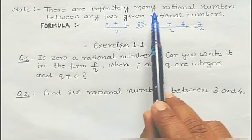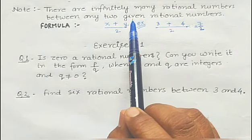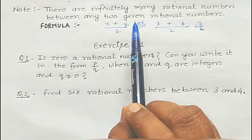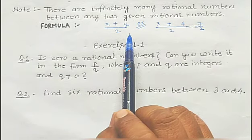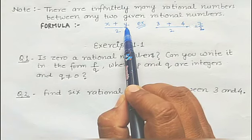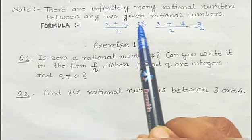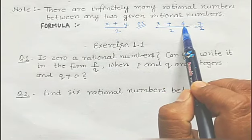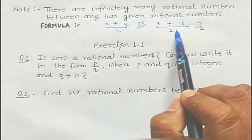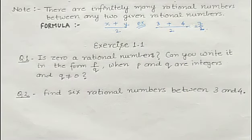Before starting the exercise, one point to note: there are infinitely many rational numbers between any two given rational numbers. It means if two rational numbers are given, we can find infinitely many rational numbers between them. The formula to find one rational number between any two rational numbers x and y is: x plus y by 2. For example, between 3 and 4: 3 plus 4 by 2 equals 7 by 2. So 7 by 2 is a rational number between 3 and 4.